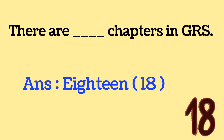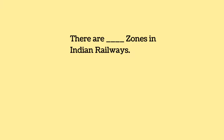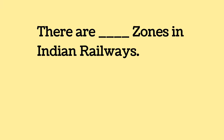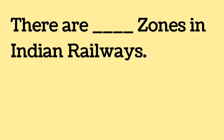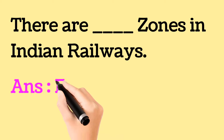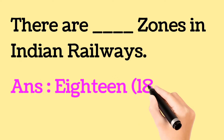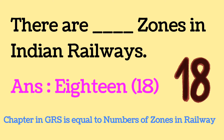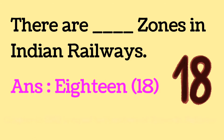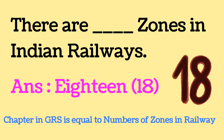Let me correlate the next two questions. Total number of chapters available in GR is 18. Now, how many zones are there in Indian Railways? This is also 18. Recently a new zone was created — the South Coast zone — so it was previously 17 but is now 18. As a memory trick: 18 chapters in GR, and 18 zones in Indian Railways — correlate both to remember two answers at a time.